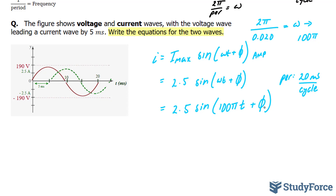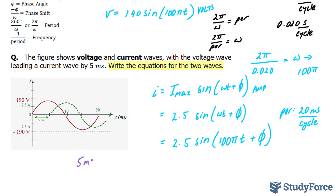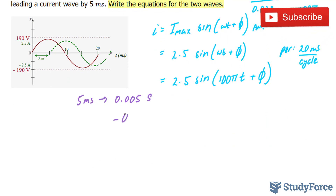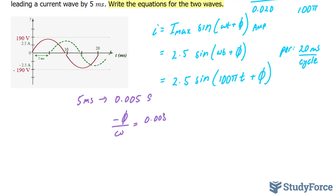The difference between the two waves, apart from the amplitude, is that the current has a phase shift of 5 milliseconds. 5 milliseconds equals 0.005 seconds. The formula that relates phi with phase shift is: negative phi over omega equals the phase shift, which is 0.005. We established that omega equals 100 pi, so we replace that: negative phi over 100 pi equals 0.005.